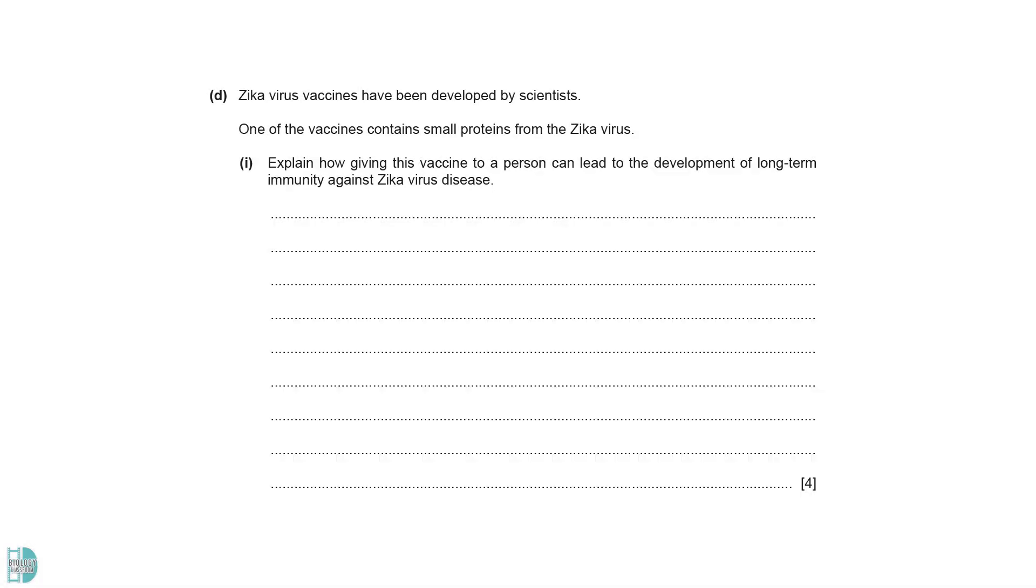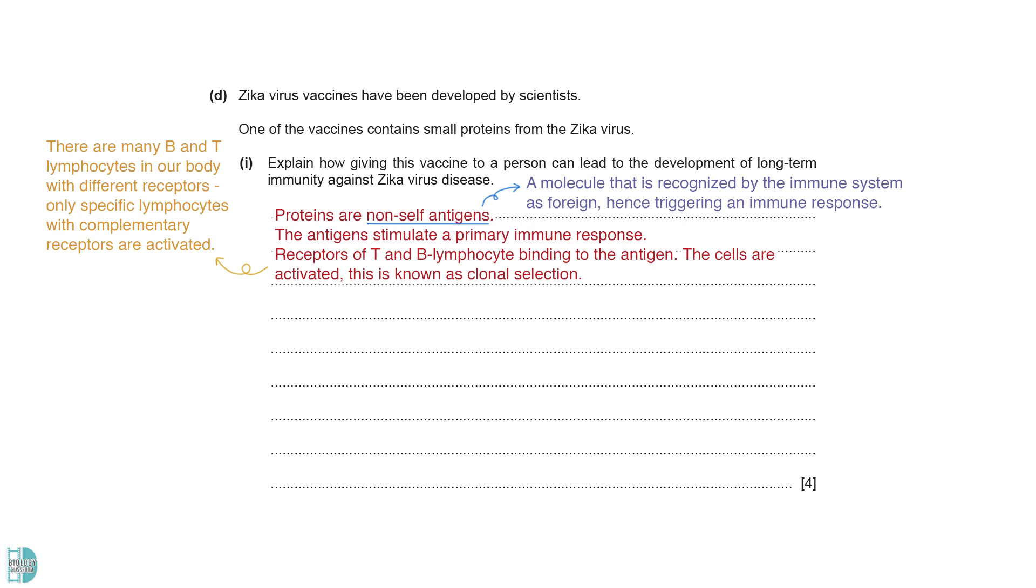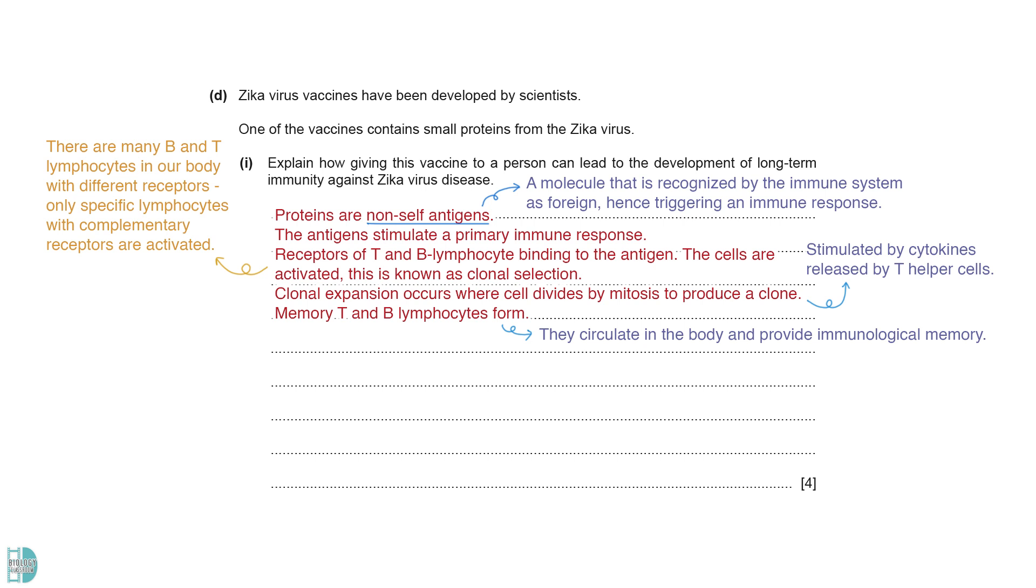D1 wants you to explain how a vaccine can lead to the development of long-term immunity. The proteins in the vaccine are non-self-antigen. It is a molecule that is recognized by the immune system as foreign, hence triggering an immune response. If this is the first encounter, a primary immune response is stimulated. There are many B and T lymphocytes in our body with different receptors. Specific lymphocytes use their complementary receptors to bind to the antigen and get activated. This is known as clonal selection. Clonal expansion will then occur, where the cell divides by mitosis to produce a clone. This is stimulated by cytokines released by T helper cells. Some of the lymphocytes specialize into memory T and B lymphocytes. They circulate in the body and provide immunological memory.